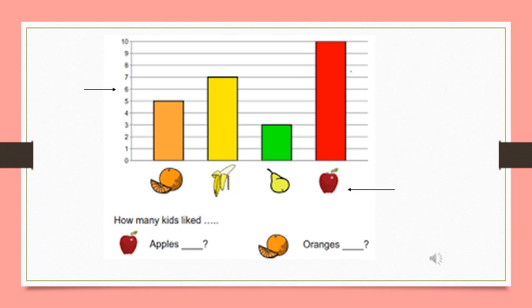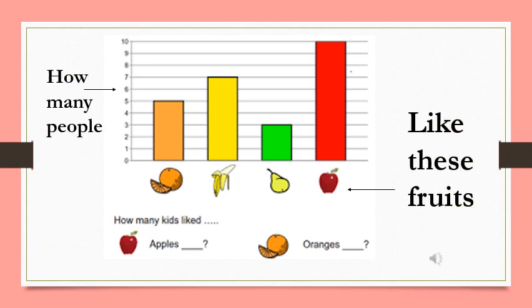Remember I told you that graphs give information? Well that's exactly what's happening here. This graph is giving information about how many people like each fruit. Let us draw some more conclusions to see how many people like other fruits.